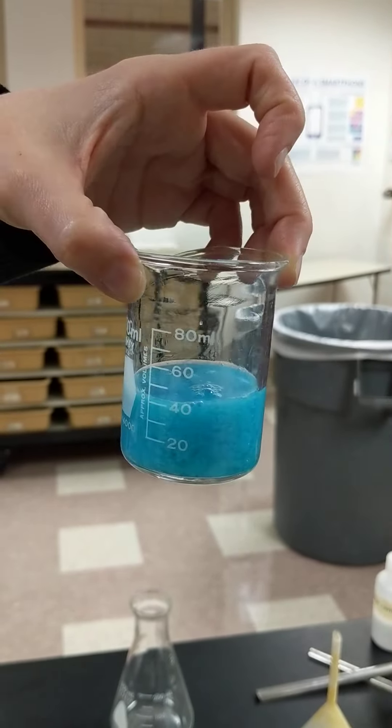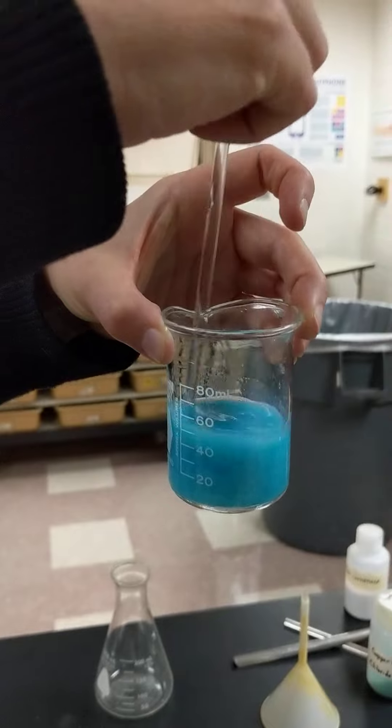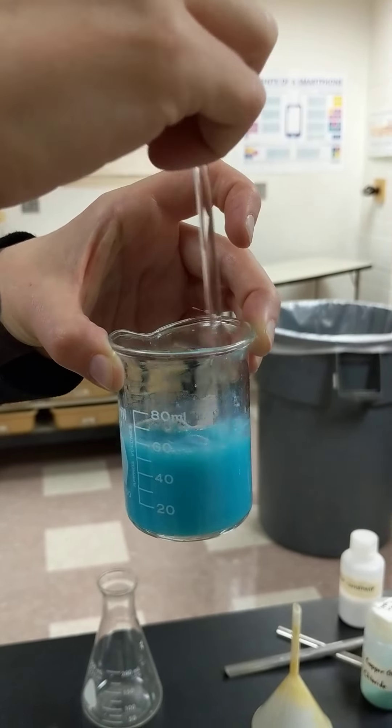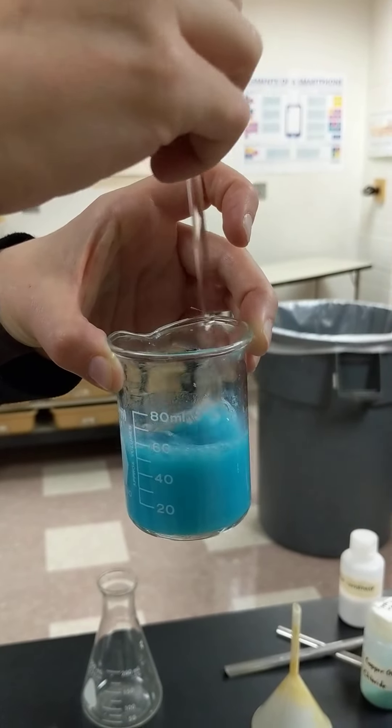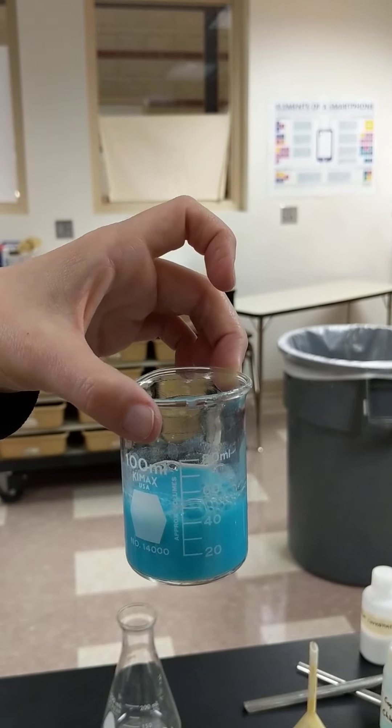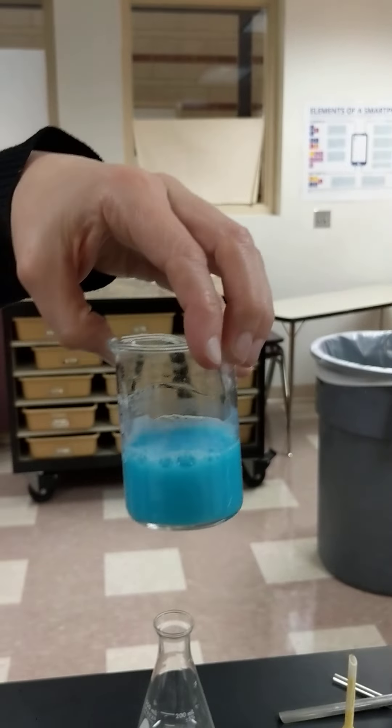And I will stir just to make sure that it gets all mixed together properly. It doesn't matter which stirring rod we use for this because they're mixed together. But that's what the observations look like now for the mixture. So you're doing it for the mixture.